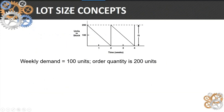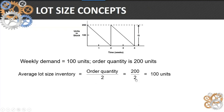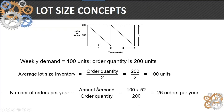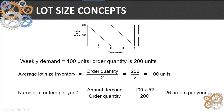If you look at the lot size, as we go back to our sawtooth curve where we're depleting inventory and then replenishing inventory based on that order quantity — in this case the width and demand is 100 units and the order quantity is 200. The average lot size would then be 100 units, because we're maintaining an average of 100 units, and the number of times that we're going to order would be 26 periods per year.